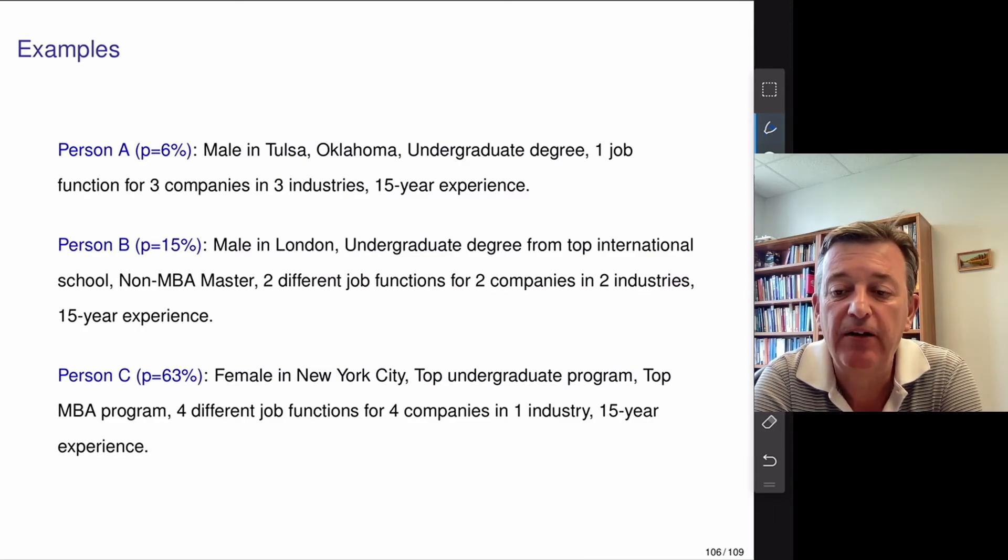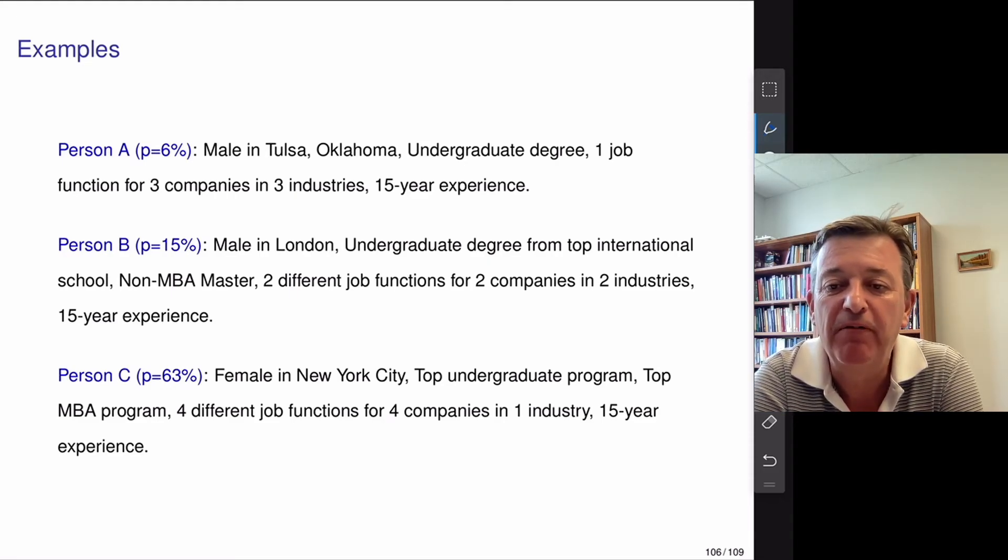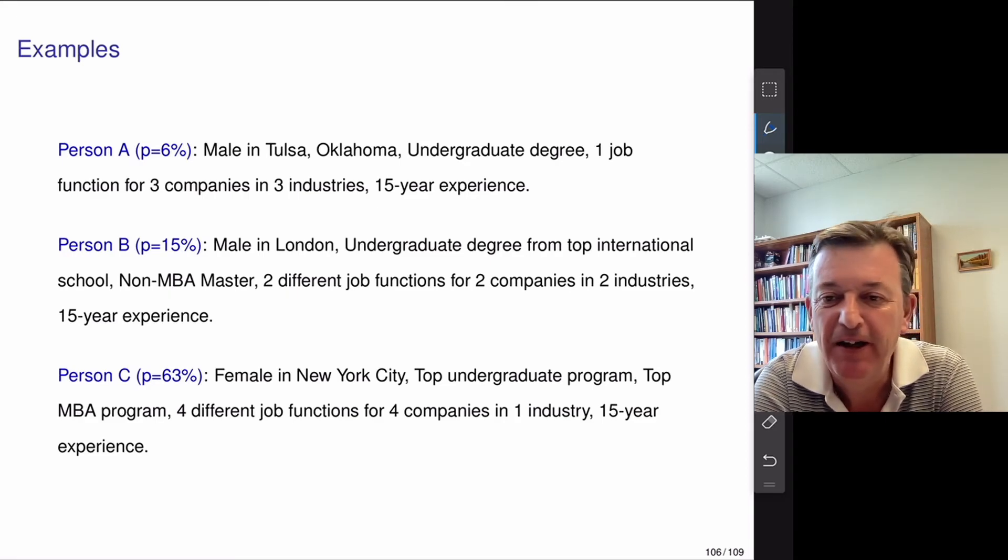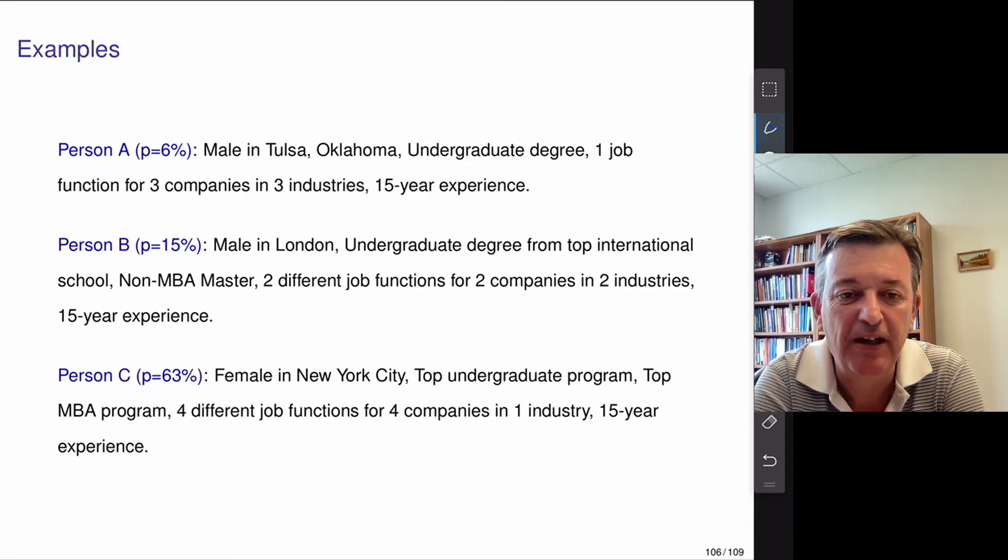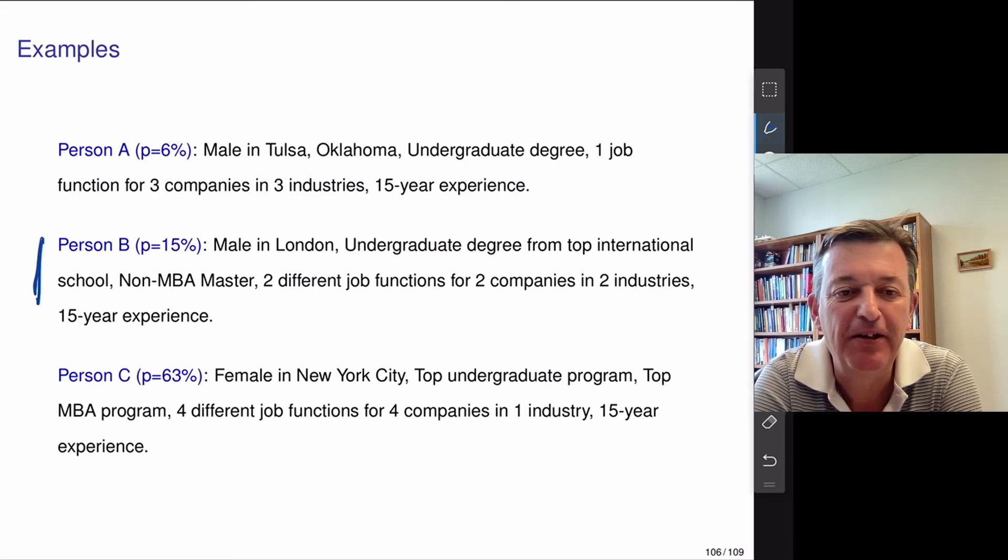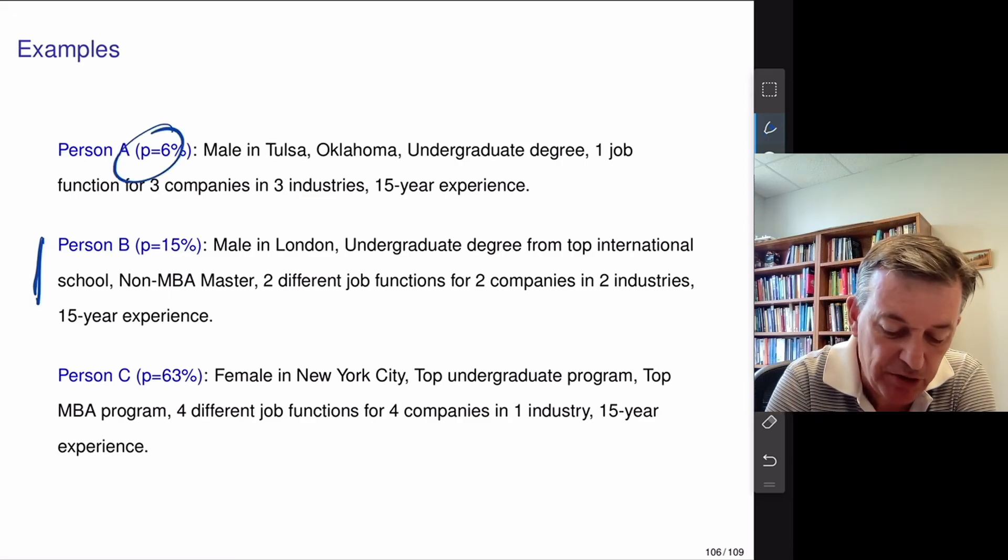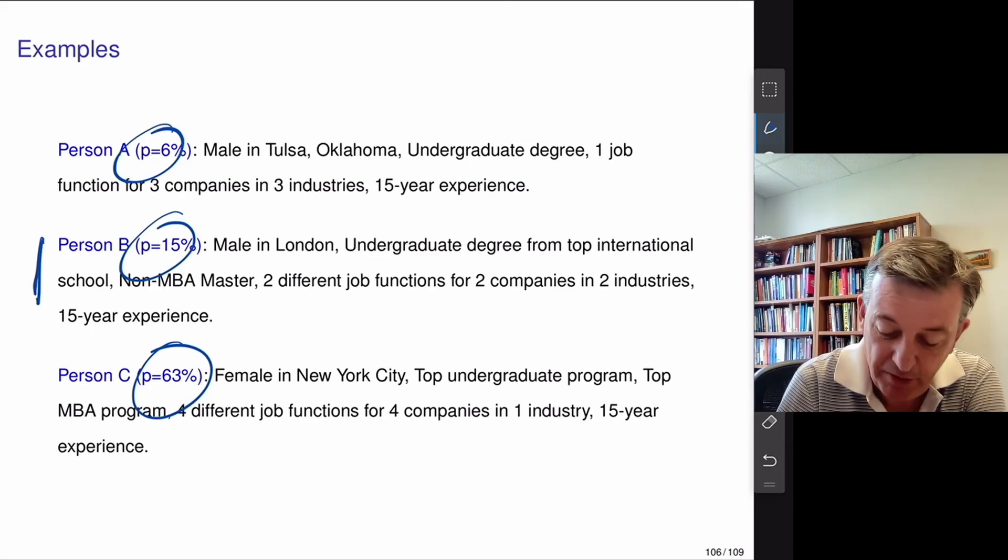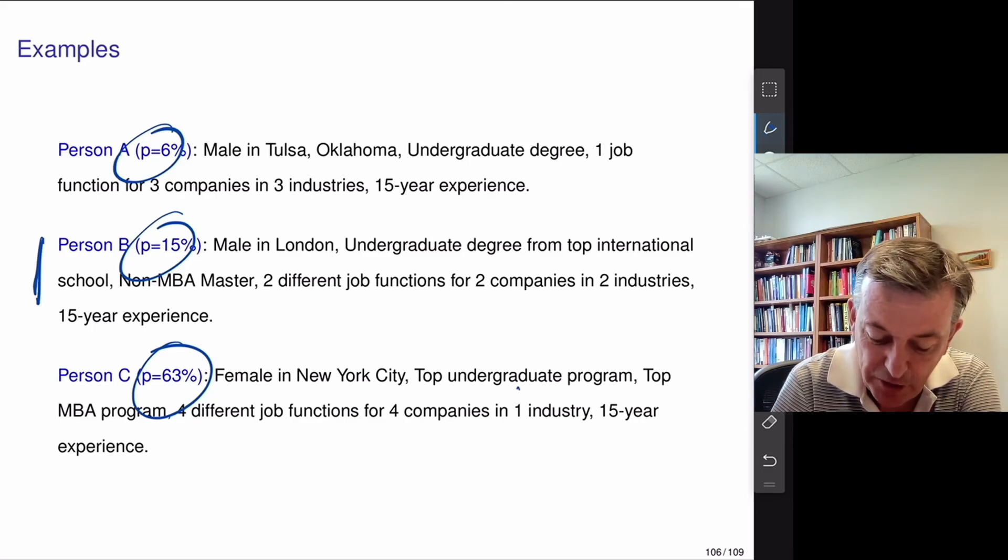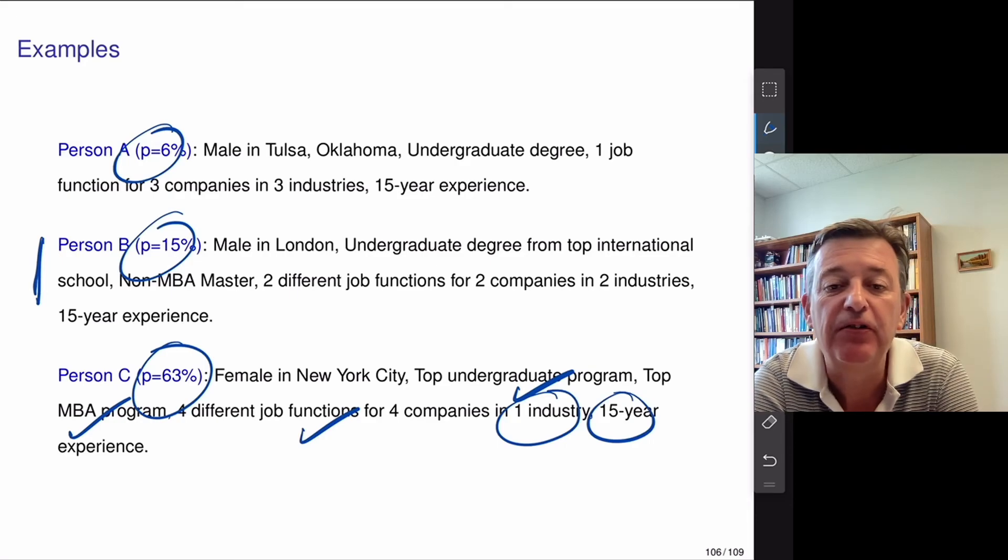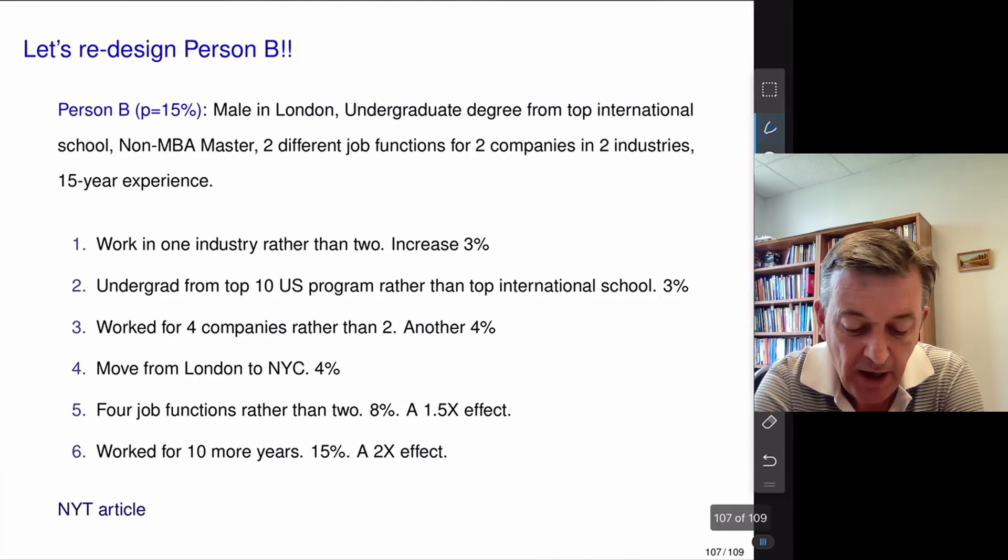And so here's just three examples. As I said, if you go to the New York Times website, you can plug your own data in and you can see if you've made slightly different choices, what would have happened to you or what would happen to your probability of success. And I'm sure all these three people here are equally happy, but it's interesting to see what you would get. And I guess I related a little bit to person B. And you can see how the probability has changed 6%, 15%, and 63%. And so, you know, the winning strategy is really top undergraduate program, top MBA, different job functions in one industry. And, you know, years experience, you know, does help as well.